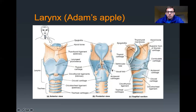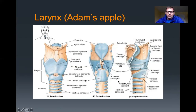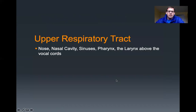Where we see the vocal folds indicated here, any parts of the respiratory system above those vocal cords are considered part of your upper respiratory tract. Anything inferior to that makes up the lower respiratory tract. Notice here there's also the hyoid bone we learned about earlier. The upper respiratory tract is the nose, nasal cavity, sinuses, pharynx, and larynx — everything above the vocal cords. Those vocal cords vibrate back and forth to produce your voice.